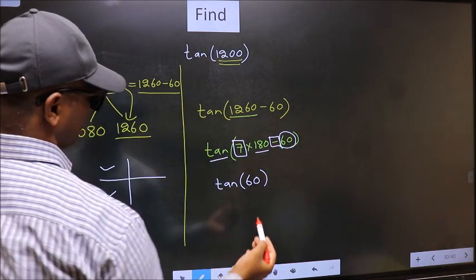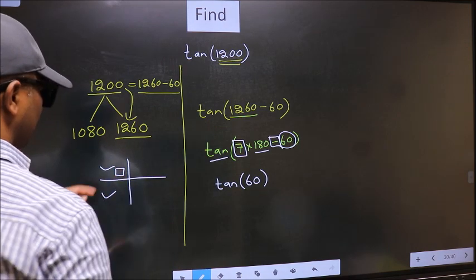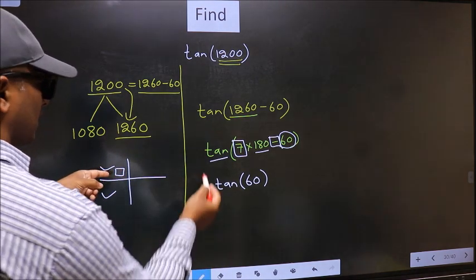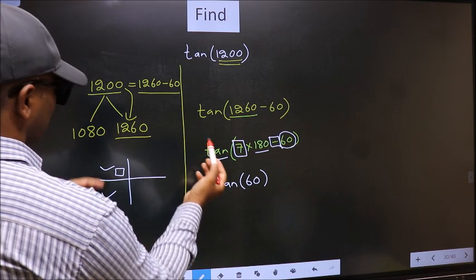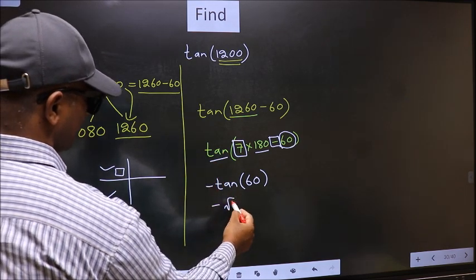Here we have negative. That means the angle lies in the second quadrant. And in the second quadrant, tan is negative. So we should put negative. So negative tan 60 is root 3.